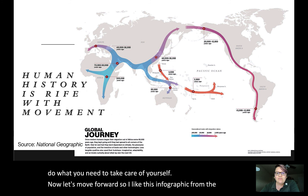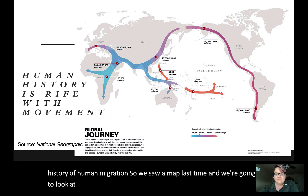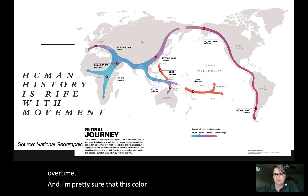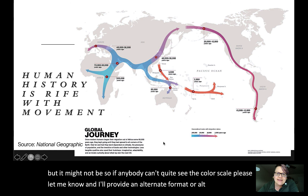I like this infographic from National Geographic because it adds to our understanding of the history of human migration. We saw a similar map last time, and what this one does that others don't is use color to show changes over time. It may be colorblind-approved, but if anyone can't see the color scale please let me know and I'll provide an alternate format.